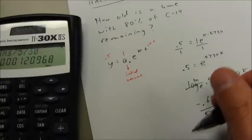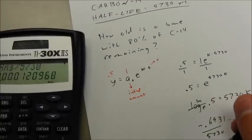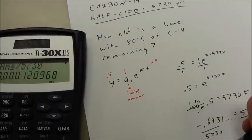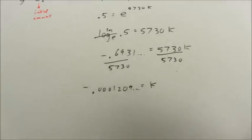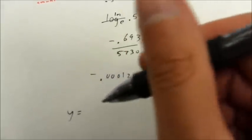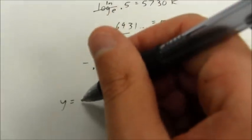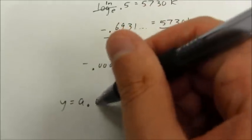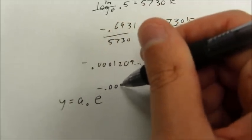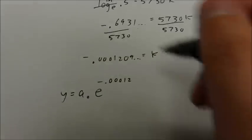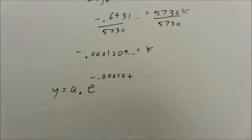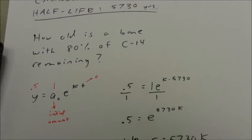So k is this negative 0.0001209, so on. And so my specific equation for carbon-14 is y equals a-naught e to the negative 0.00012 power times t. Substituting back in for k in that original problem.